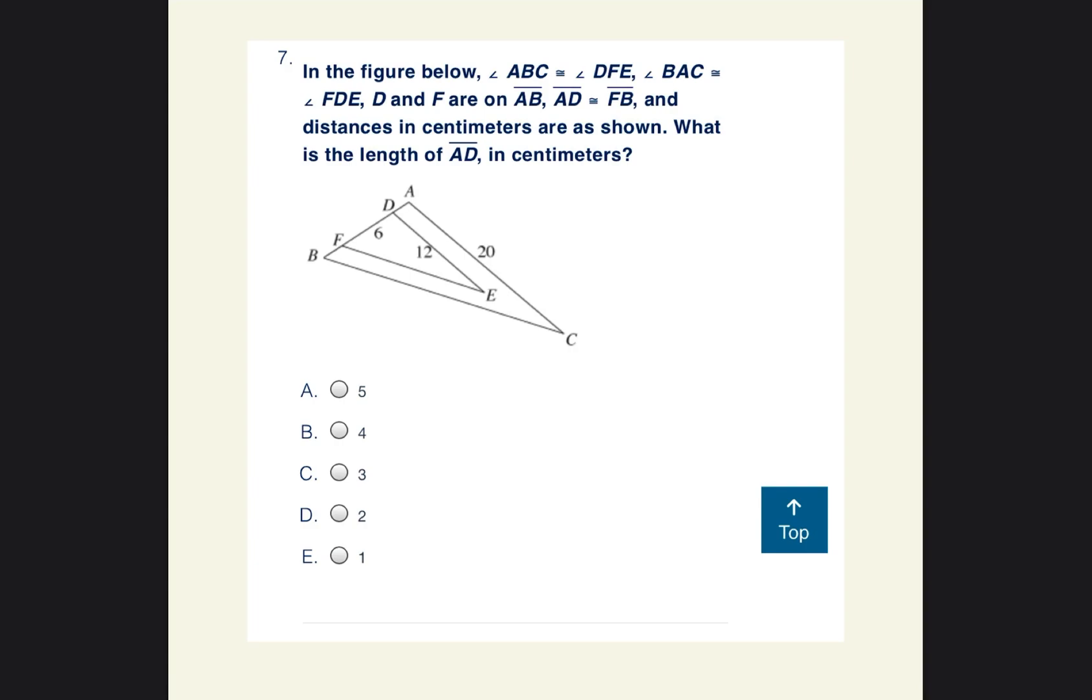Let's go ahead and go to question number seven. It says in the figure below, angle ABC is congruent to angle DFE, angle BAC is congruent to FDE, D and F or A and B. So that's a lot of information. All it's really saying is that they have congruent angles, so that just means that this larger triangle is going to be congruent to this smaller triangle. So they should have the same ratio of sides. If we look at this smaller triangle, one side is 12, the bottom side is 6. And if we go ahead and make a ratio, this longer side is 20, so we're going to put the 20 on top. And this bottom side is what we don't know yet.